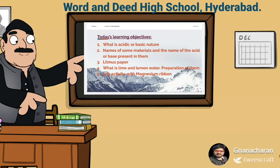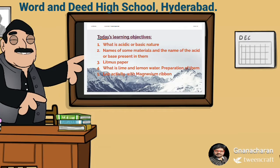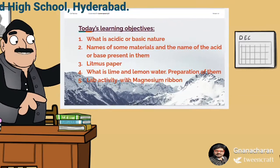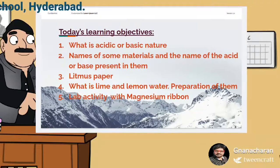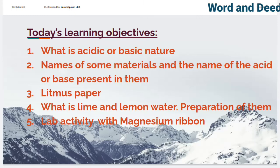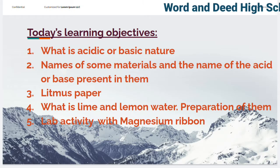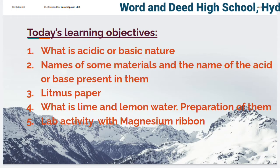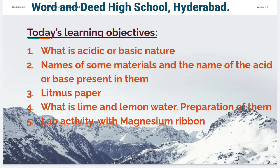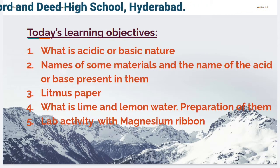Today's learning objectives are: What is acidic or basic nature? Names of some materials to be tested. Litmus paper. What is lime and lemon water and preparation of them. Lab activity with magnesium ribbon.